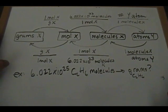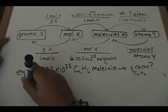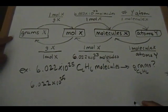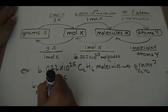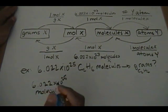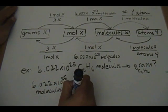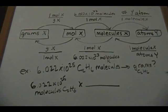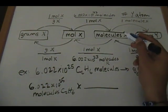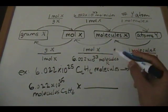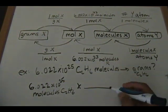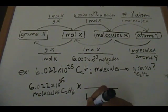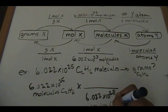With that being said, let's start. Our starting point — our given — is 6.022 times 10 to the 25th molecules of C₂H₆. We multiply that by our first conversion factor, going from molecules of X — molecules of ethane — to moles of X, which is moles of ethane. So on the bottom we put 6.022 times 10 to the 23rd molecules of C₂H₆.